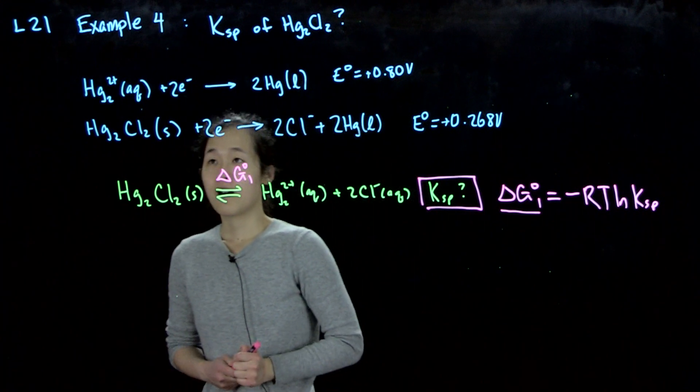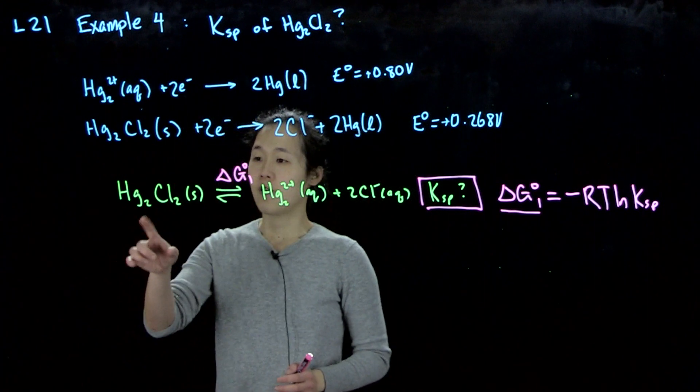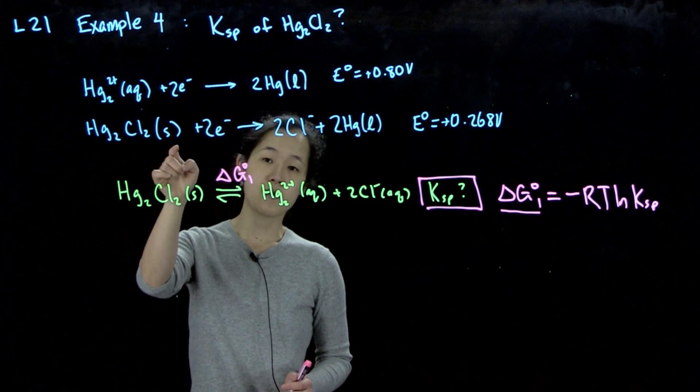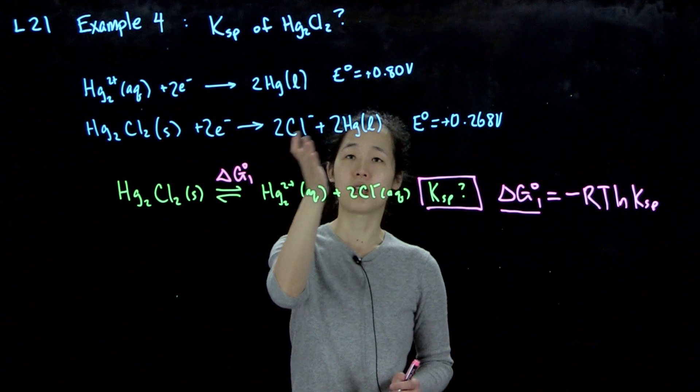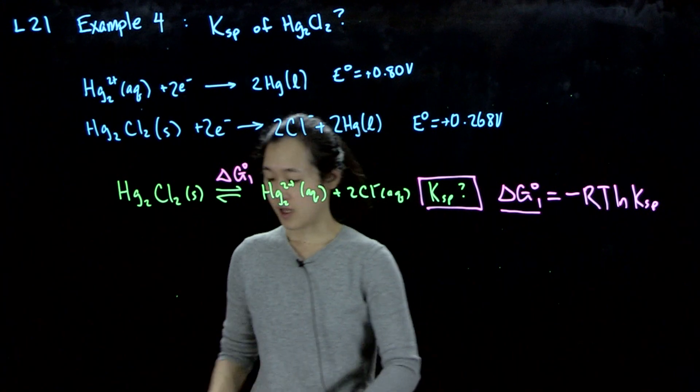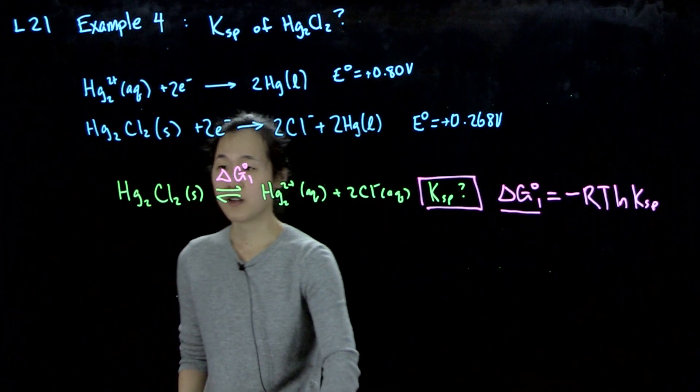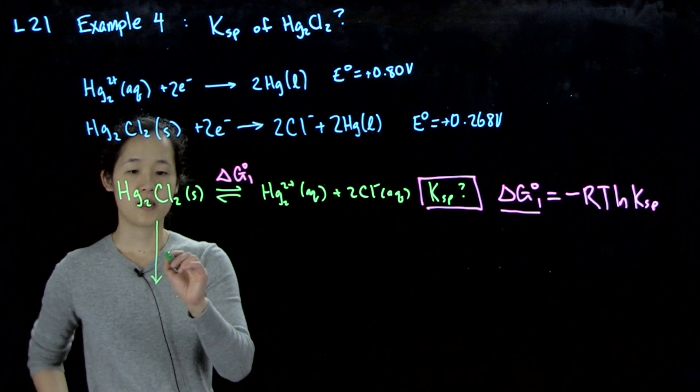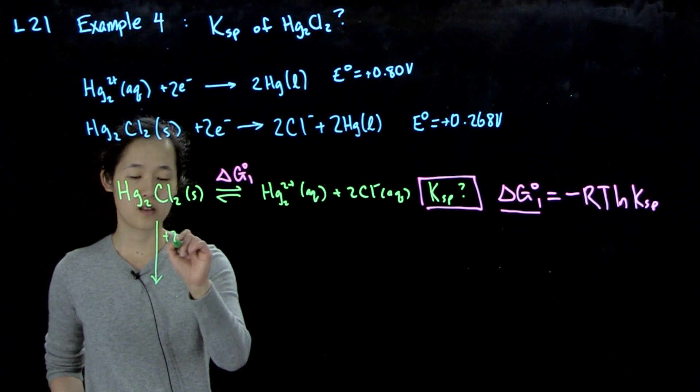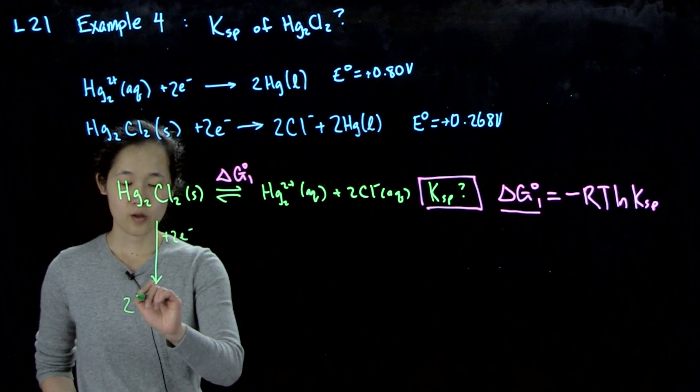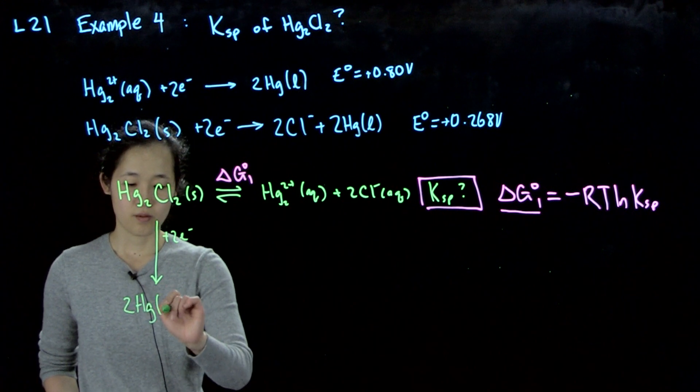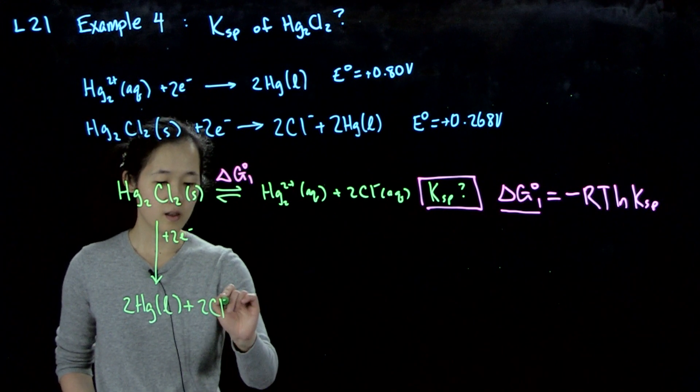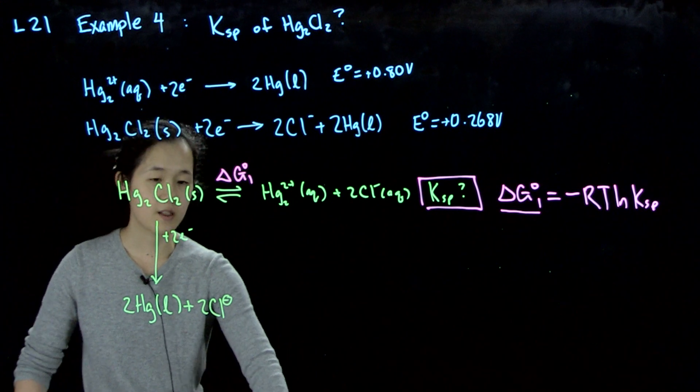So the two equations that we have are, we know that if we start with this starting material, the reduction of this same starting material gives us two chlorides plus mercury liquid. Then we can draw this chemical cycle down. So this is plus two electrons, and this gives us two chlorides plus mercury liquid. Let's call this delta G2.